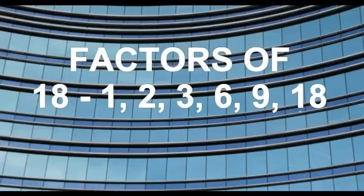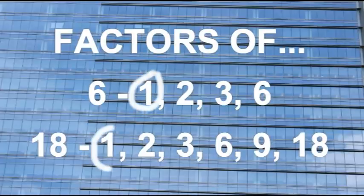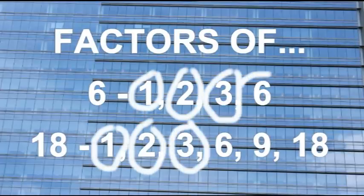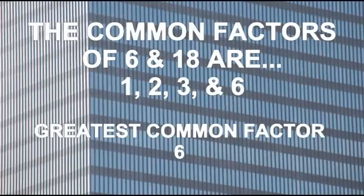You can rewrite the factors of 18 horizontally across your page: 1, 2, 3, 6, 9, and 18. Now let's compare the factors of 6 and 18 together. Notice that some of the factors are on both rows — those numbers would be the common factors. The common factors would be 1, 2, 3, and 6. The largest of these common factors is 6, and it's called the greatest common factor.